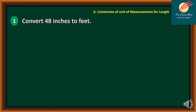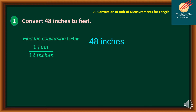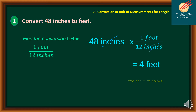Let's have example number one: convert 48 inches to feet. The first step is to find the conversion factor. Since one foot is equal to 12 inches, we express this in fraction form such that we cancel out inches and are left with feet as the unit. So we have 48 inches times one foot over 12 inches, and we can factor out the inches. So we have 4 feet. Therefore, 48 inches is equal to 4 feet.